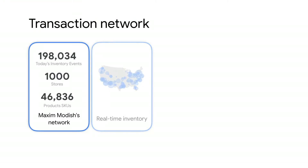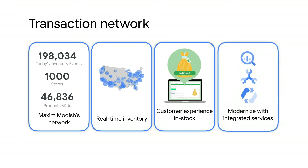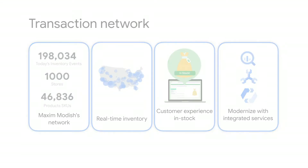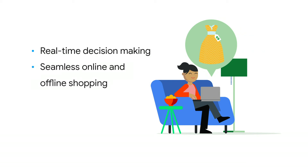By implementing this inventory ledger solution with Cloud Spanner, Maxim Modish now has a real-time view of inventory across hundreds of data sources and applications, the ability to scale up and down to support peak traffic during large shopping events, managed services which significantly decrease the burden of operations, and the ability to modernize and adapt to new business needs through an ecosystem of integrated cloud services. By leveraging just some of the powerful features of Google Cloud, Maxim Modish is now able to do real-time decision-making for omnichannel retail and build a seamless online and offline shopping experience for thousands of happy customers using a single source of truth.